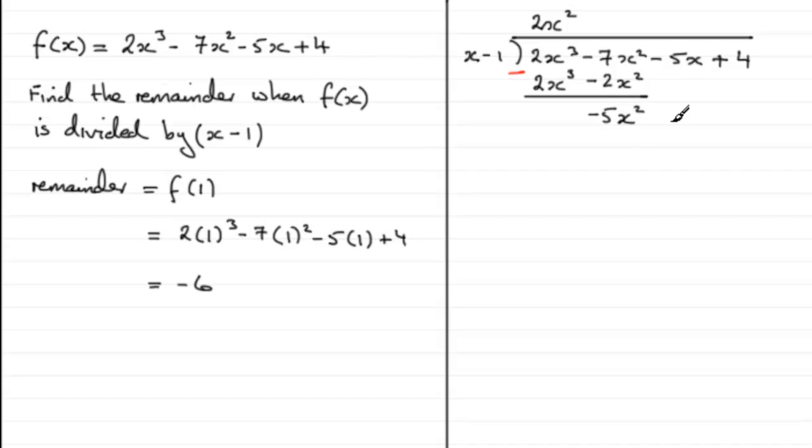Bring down the next term, -5x, and we start all over again. What do you multiply this x by to give -5x²? Well, it's going to be -5x, so put that up there, and multiply -5x with x - 1. -5x times x is -5x². -5x times the -1 is +5x.